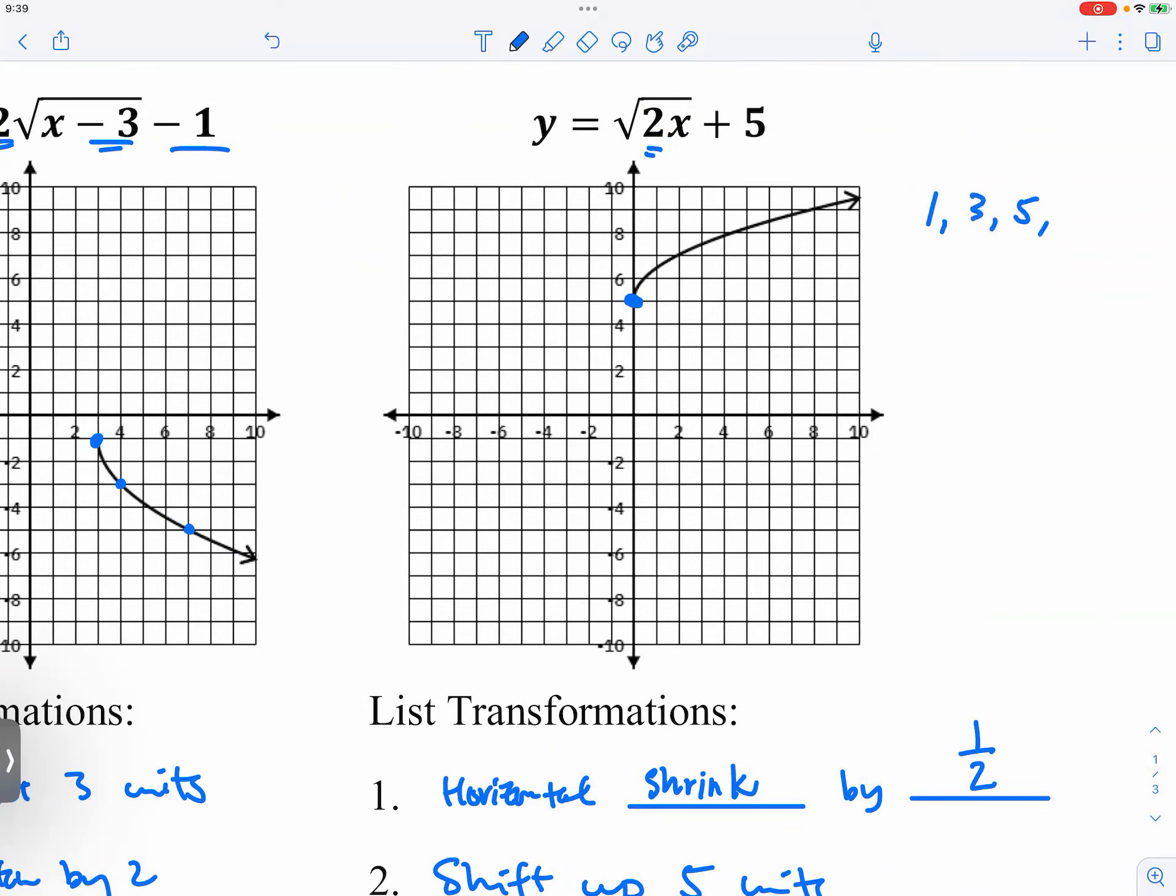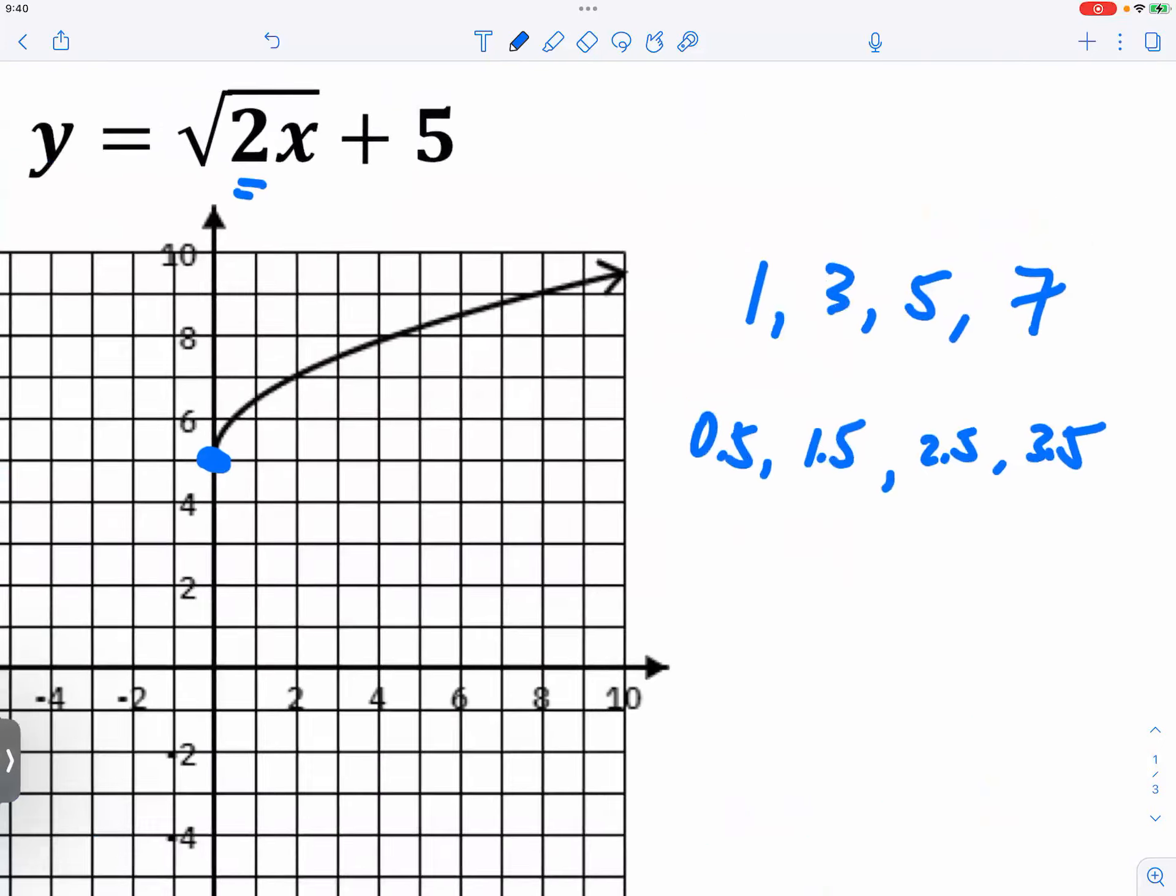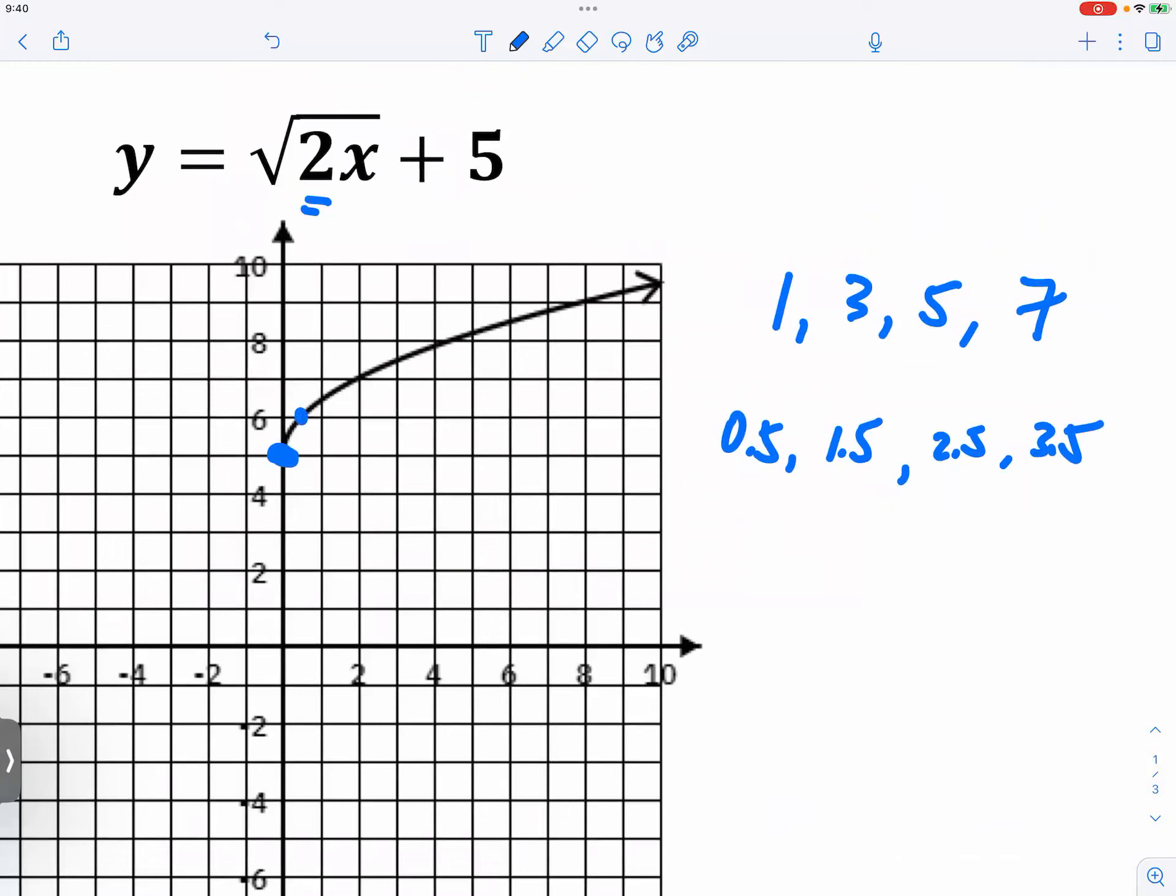So typically we move to the right one, three, five, seven. But because of the horizontal compression, now we're not moving one, three, five, seven. We're only moving 0.5, 1.5, 2.5, and 3.5. And does it show on the graph? 0.5, 1.5, 2.5, and then 3.5. So it's very evident from the graph.